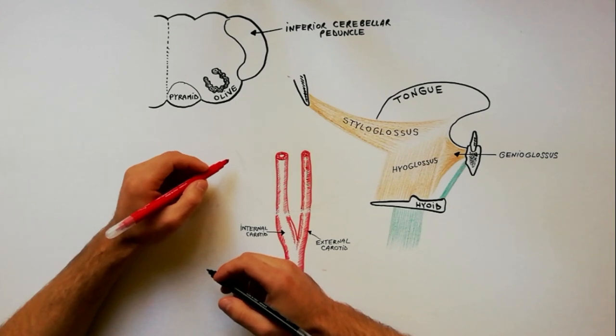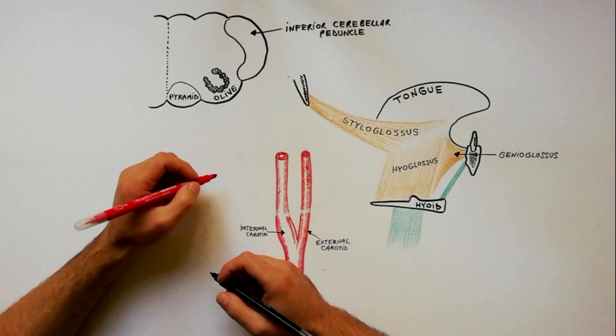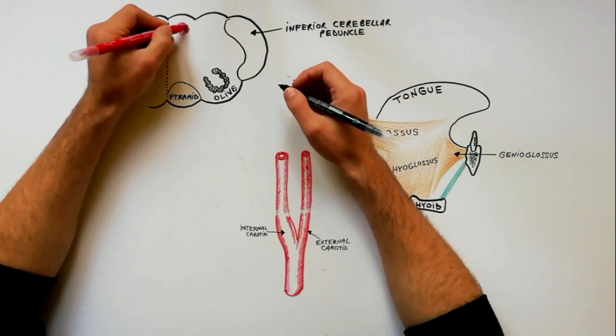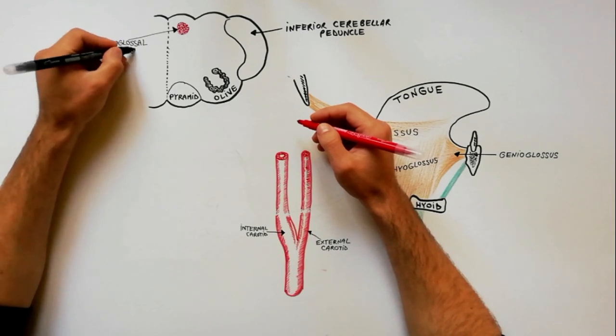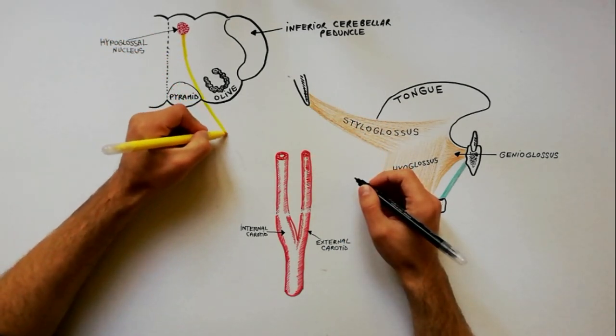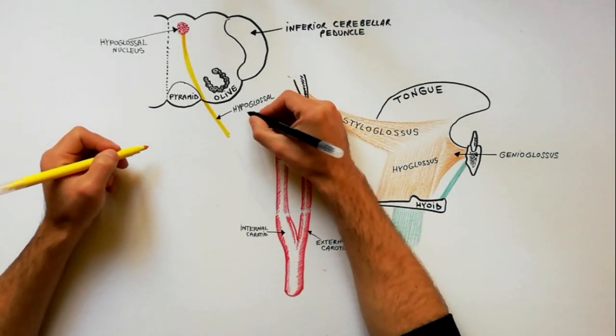The hypoglossal nerve is the 12th cranial nerve and is purely motor. Its fibers arise from the hypoglossal nucleus located in the medulla. The hypoglossal nerve arises on the ventral aspect of the medulla between the pyramid and the olive.